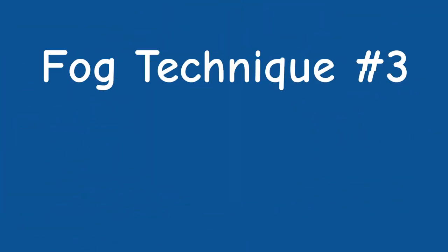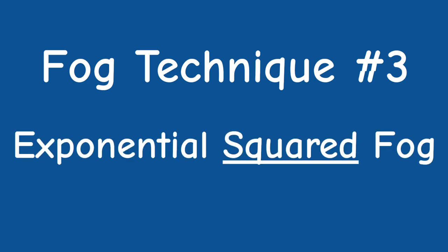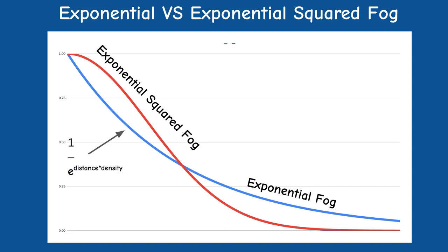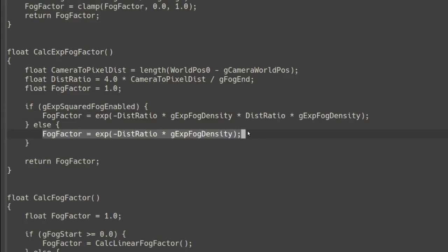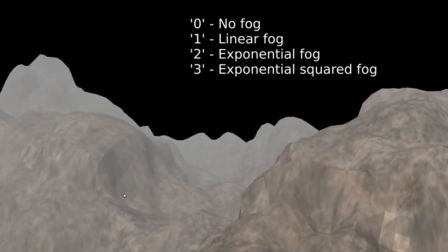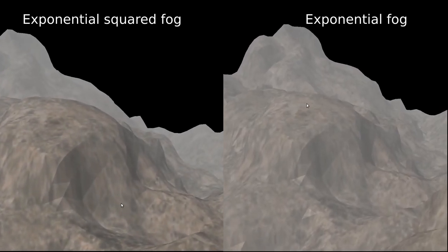We can make a simple change to exponential fog and get very pleasing results — the exponential squared fog. Instead of raising e to the negative power of distance times density, we take the square of distance times density, also negative. The exponential squared function drops more sharply closer to the camera, giving less fog near the viewer, and then levels off as distance increases. The implementation is very simple — just multiply the parameter to the exp function by itself. Press 3 for the exponential squared version. The results are very nice and I think this one is my favorite.